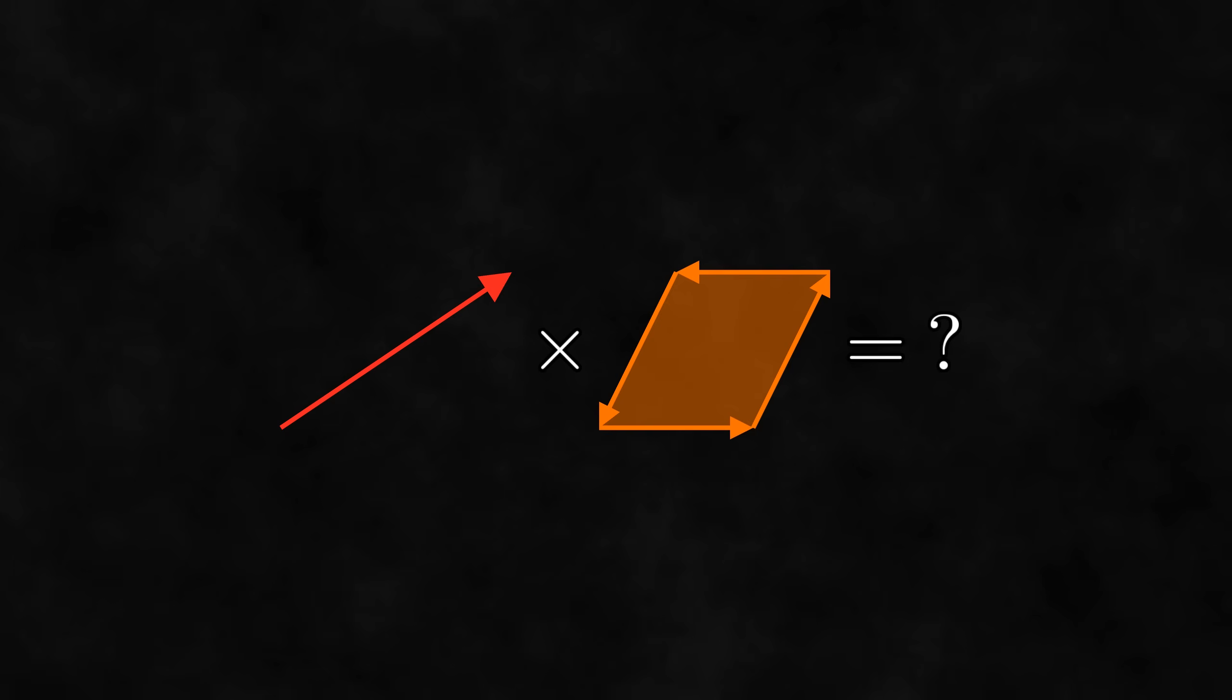We now know how to multiply arbitrary multivectors. But what does this product look like geometrically? That is what we will look at in the next video.